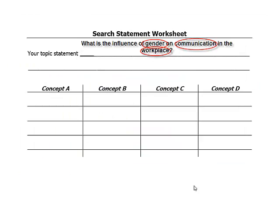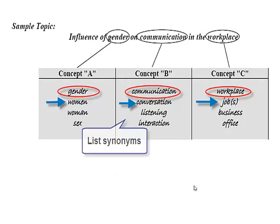Before we go to ERIC, we need to think about the question we're researching. Let's take this sample question: What is the influence of gender on communication in the workplace? Write down your question and circle the three or four most important words. Here I've circled gender, communication, and workplace. Write each one of these words in a column on a piece of paper, then begin listing synonyms underneath each word. For example, under communication you might have conversation, listening, or interaction.